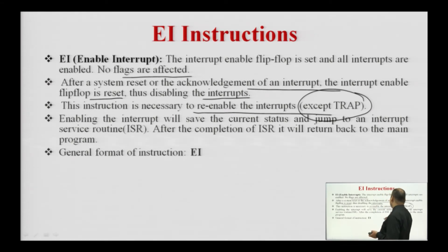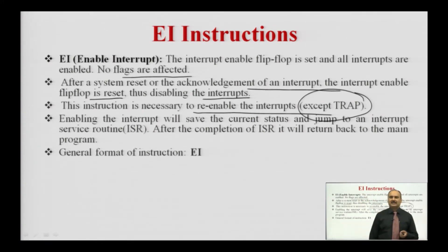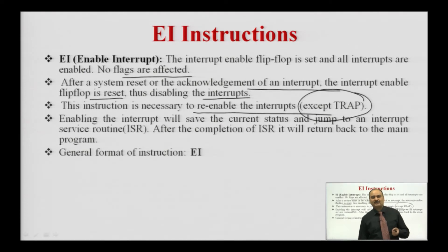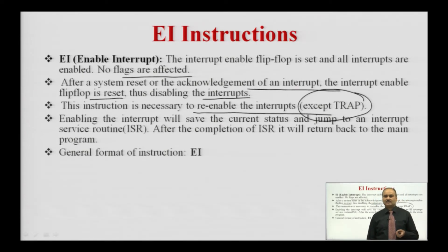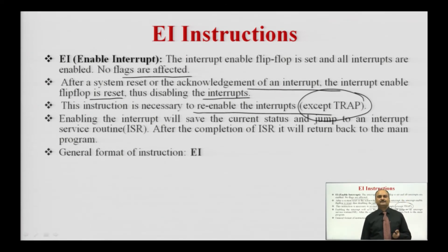Enabling the interrupt saves the current status and jumps to the interrupt service routine. After the completion of the ISR, it returns back into the main program. Whenever any interrupt is enabled, it transfers control from the main program to the interrupt service routine, executes the ISR, and returns back into the main program. The general format of this EI instruction is simply: EI.